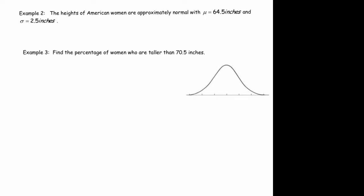Let's do another example here, again involving the height of American women. The height of American women are approximately normal, with a mean of 64.5 inches and a standard deviation of 2.5 inches. Find the percentage of women who are taller than 70.5 inches. So as usual, we're going to put our mean at the center of our diagram, 64.5 inches. 70.5 inches is over here on the right. It doesn't matter so much that it's scaled right, you just need to put it on the right side. Now since we want the percentage of women who are taller than 70.5 inches, we're really finding the area to the right of that vertical line.